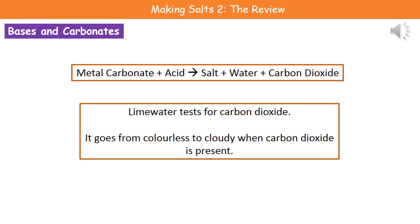The other metal compound we need to understand the reaction of with acids is the metal carbonates. These ones are slightly different to our other bases in the fact that when a metal carbonate reacts with an acid, we make three things: we make our salt and water still, but we also make carbon dioxide.